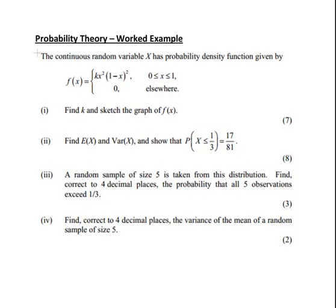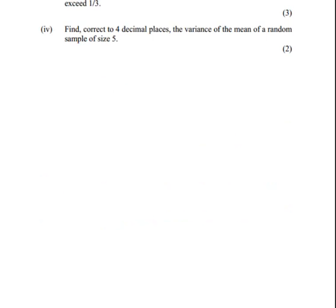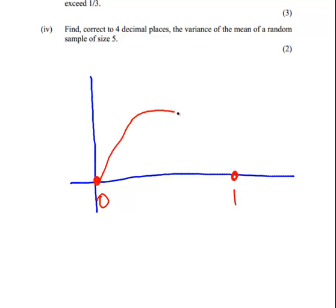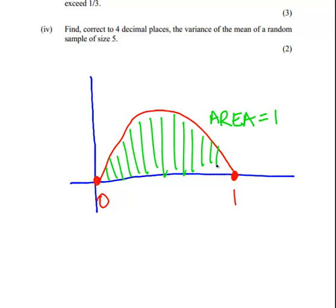What we're going to remark is that between 0 and 1 we would have some sort of curve here, and it's 0 elsewhere. The area under the curve is going to be 1. So we'll use integration to determine what the value of k is, and then we'll sketch it.